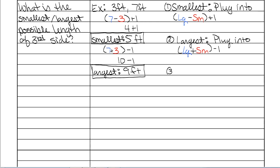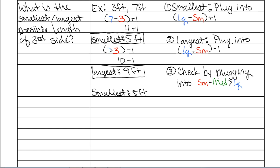The last thing you want to do is check by plugging back into the Triangle Inequality Theorem. Checking the smallest first: the smallest was 5 feet, which makes the order 3 feet as smallest, 5 feet as medium, and 7 feet as largest. Plugging in: 3 plus 5 — is it greater than 7? 3 plus 5 is 8, and it is greater than 7. That works.